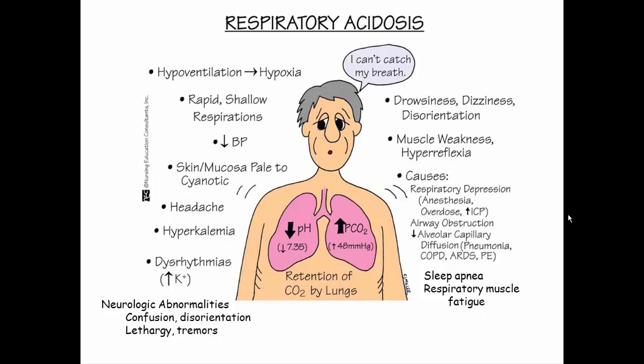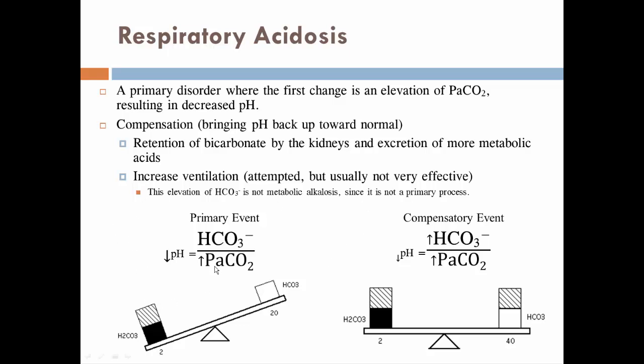Respiratory acidosis presents with various symptoms. The problem is a low pH caused by increased partial pressures of CO2 — too much carbonic acid. To compensate, we increase bicarbonate levels to balance the teeter-totter. The pH remains slightly low but closer to normal by raising bicarbonate. The kidneys reabsorb more bicarbonates and excrete more metabolic acids — because a hydrogen ion is a hydrogen ion regardless of its source, so getting rid of lactic acid hydrogens helps too.